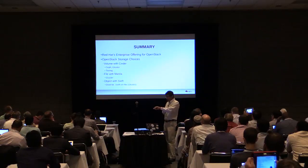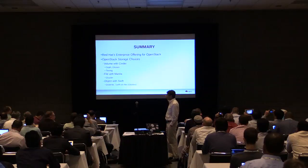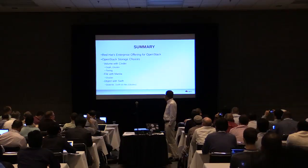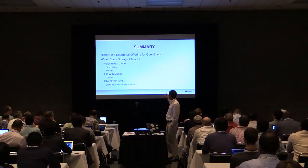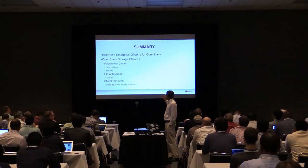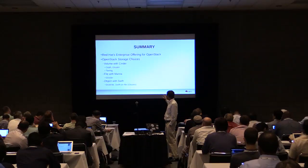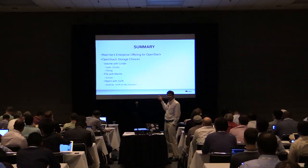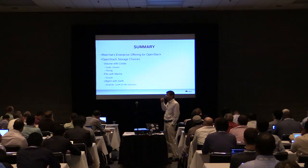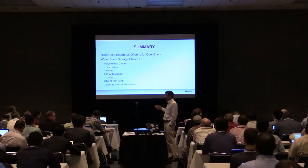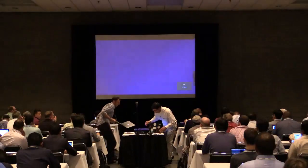To summarize: we talked about Red Hat's enterprise offering for OpenStack and the different storage choices. With Cinder, Ceph is definitely very popular, and I also illustrated how we do it with Gluster. We talked about tiering and how to start thinking about it. File sharing with Manila uses Gluster as a backend. And finally, objects with Swift — currently XFS and LVM — and soon, with disk file and Swift-on-File, you could have multiple storage backends. With that, I'll hand it over to Neil.